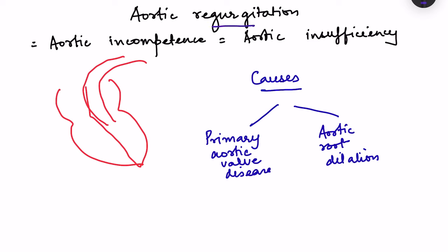Aortic regurgitation is also known as aortic incompetence or aortic insufficiency, in which the aortic valve present between the left ventricle and the aorta fails to close properly. Hence, in diastole there is backflow of blood from the aorta into the left ventricle.